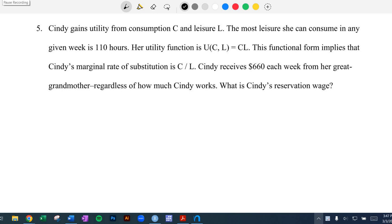Hi everybody. In this video we're going to look at a quick example of calculating reservation wage given a utility function and consumption. So let's take a look. In this problem we have Cindy. We have utility coming from consumption and leisure, and the utility function takes on this multiplicative form C times L.